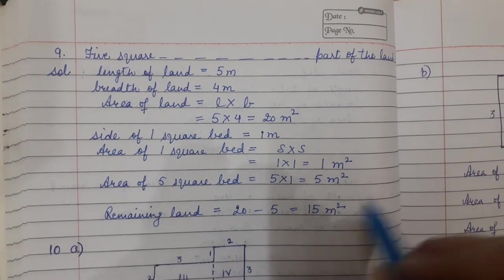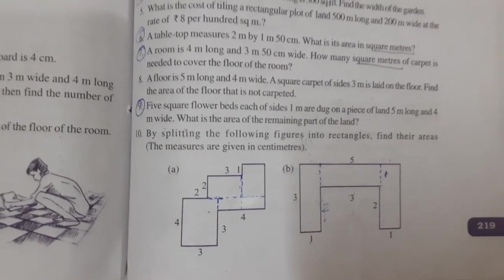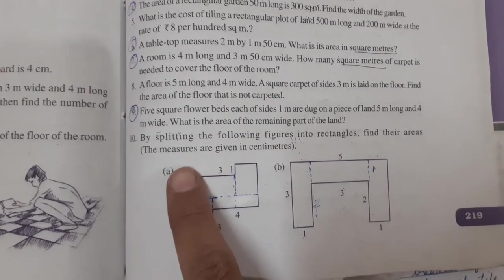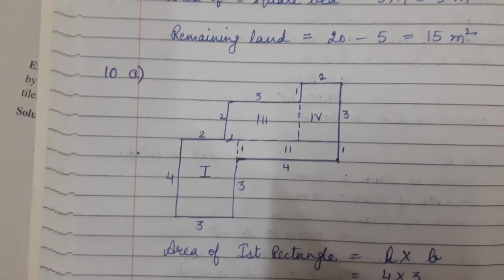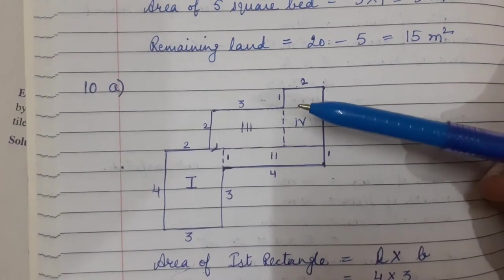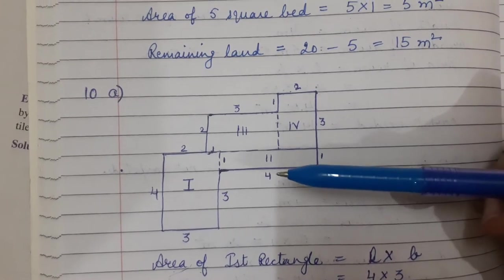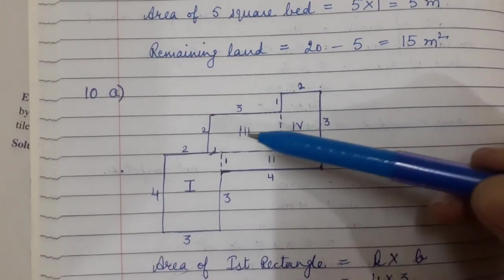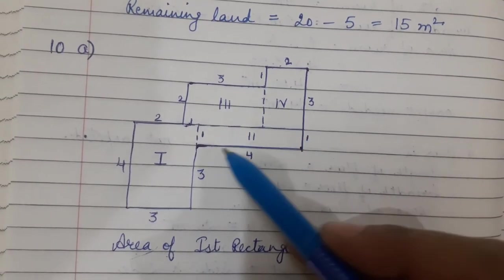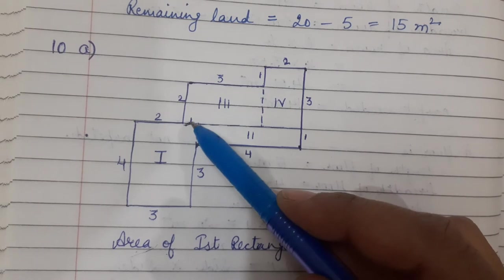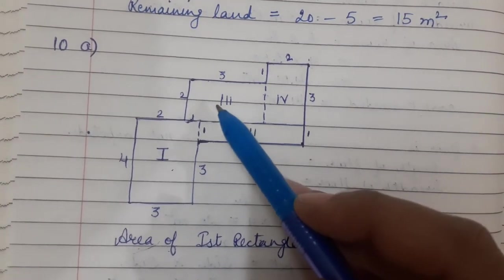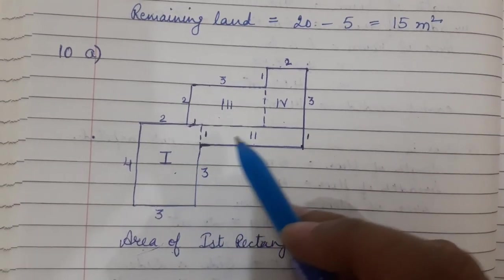Question 10: By splitting the following figures into rectangles, find their areas. This is the first figure. I have divided this figure into 4 different rectangles by extending the sides and joining them. This is the first rectangle, second, third, and fourth — you have to find the area of each of the 4 rectangles.